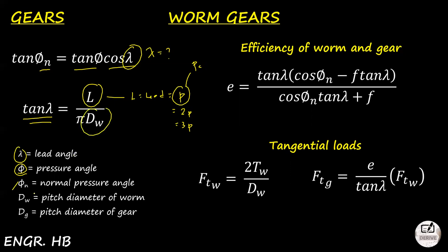DW is the pitch diameter of the worm — remember pitch diameter is different from diametral pitch — and DG is the pitch diameter of the gear. Regarding efficiency: since this involves threaded members, efficiency can't be ignored. E = [tan(lead angle) × (cos(normal pressure angle) − f × tan(lead angle))] / [cos(normal pressure angle) × tan(lead angle) + f], where f is the coefficient of friction.